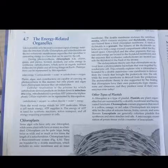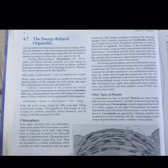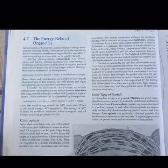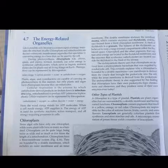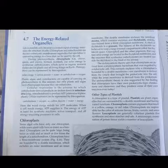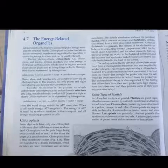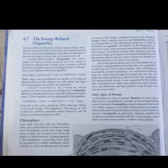Section 4.7: the energy-related organelles. Life is possible only because a constant input of energy maintains the structure of cells. Chloroplasts and mitochondria are the two eukaryotic membranous organelles that specialize in converting energy to a form that can be used by the cell. During photosynthesis, chloroplasts use solar energy to synthesize carbohydrates, which serve as organic nutrient molecules for plants and all living things on Earth. Plants, algae, and cyanobacteria are capable of photosynthesis, but only plants and algae have chloroplasts because they are eukaryotes.